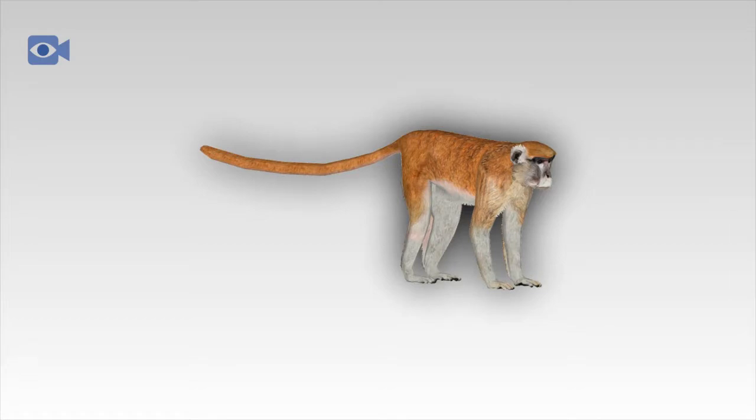The Patas monkey is an omnivorous animal that consumes a wide range of both plant matter and small animals in order to survive. They primarily feed on acacia fruits, galls and leaves along with other seasonal fruits, flowers and tree gum. Patas monkeys are also known to eat insects, lizards and birds' eggs along with raiding crops where they are often known to cause damage to the crops themselves.